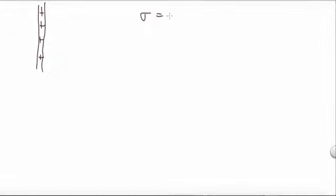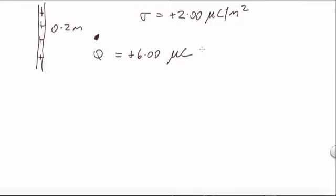We know that the surface charge density is 2 microcoulombs per square metre, and we're interested in a point 0.2 metres away from it, and at that point we have a charge that is 6 microcoulombs.